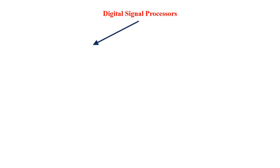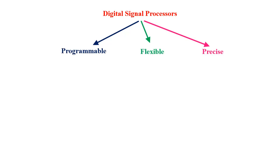Hello everyone. Processing of signals via digital systems has the advantages that they are programmable, flexible, and precise as compared to their analog counterparts.